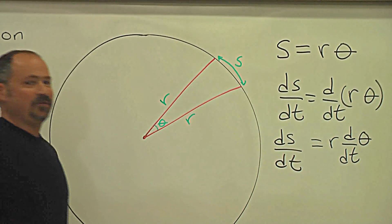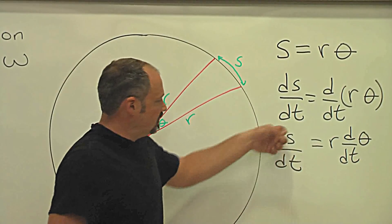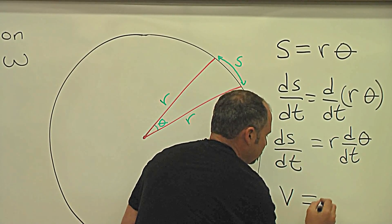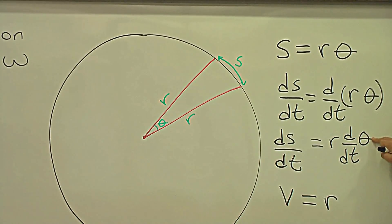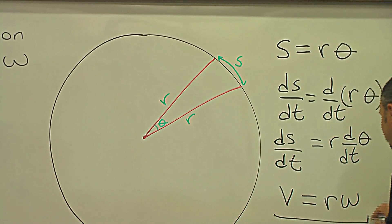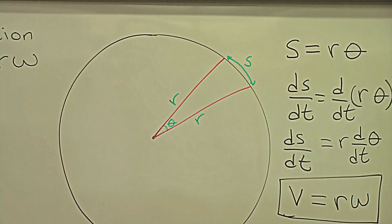And now, by definition, d/dt of this distance s, that's the linear velocity, and the rate of change of the angle, by definition, that's the angular velocity. So now we have it. Linear velocity equals the radius times the angular velocity.